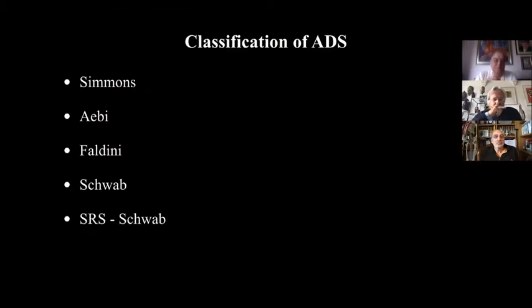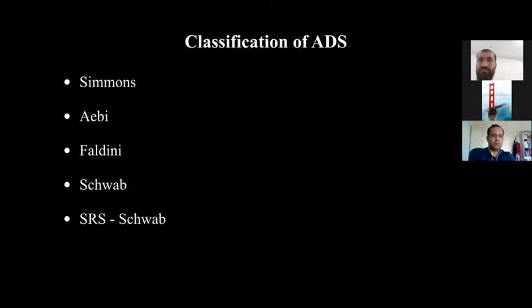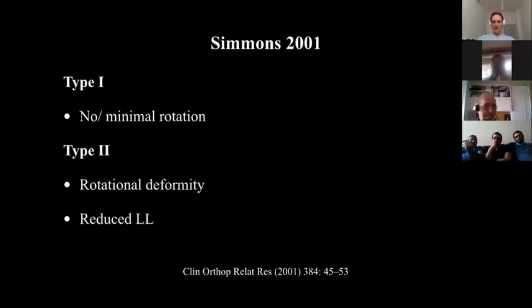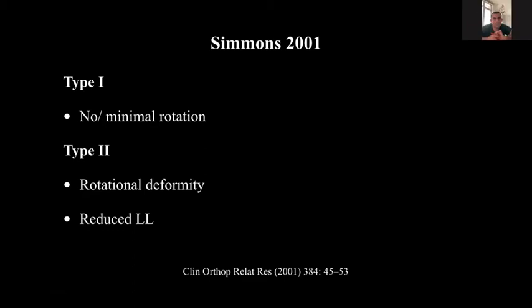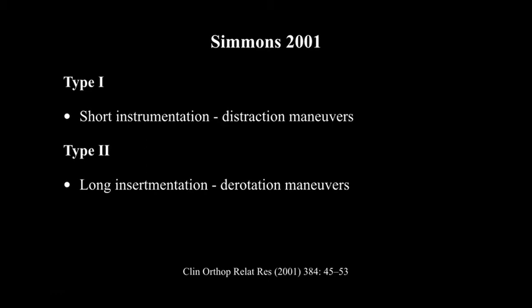My topic is classification of adult degenerative scoliosis. There are lots of classification systems. The first one was described by Simons in 2001. He divided adult scoliosis into types: type 1 and type 2. They recommend distraction and short fusion in type 1, which has no rotation. In type 2, which has rotation in the vertebrae, they recommend long instrumentation and derotation maneuvers to correct the deformity.